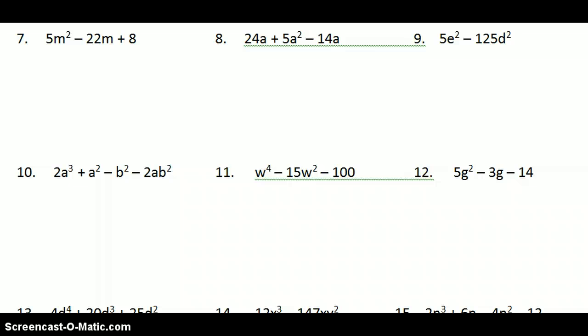Number seven starts off with three terms. When you see three terms, immediately you expect trinomial. Make sure there's no like terms, and also you should check to see whether there is a GCF that you can take out. In this case, there isn't. So the leading coefficient is not one. That means I'm going to have to use complex factoring, complex trinomials.